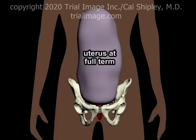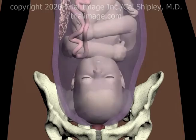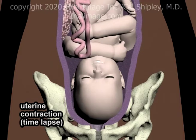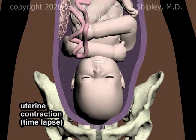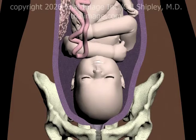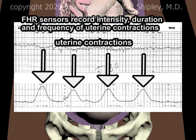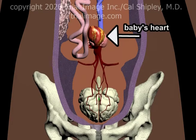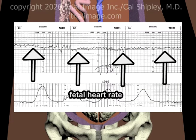Here is a uterus carrying a fetus at full term. Contractions of the uterus propel the baby through the birth canal. FHR sensors record the intensity, duration, and frequency of uterine contractions on the lower half of the monitoring strip. The fetal heart rate is recorded on the upper half of the monitoring strip.